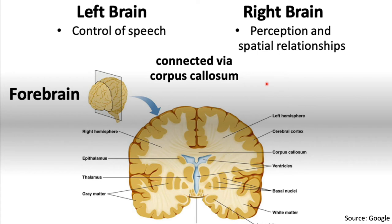Something you should notice is that there is localization of function in the left and right hemispheres. The left brain is controlling speech for the most part, while the right brain is controlling perception and spatial relationships. We're going to see how these two functions play out when someone is split-brained.